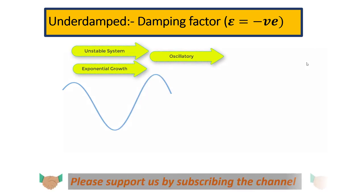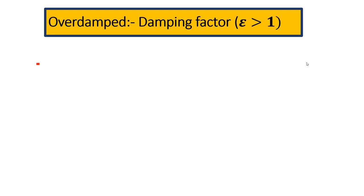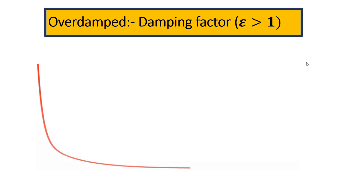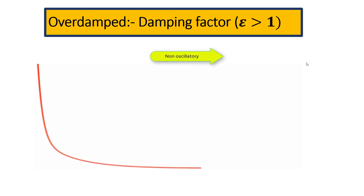The second main case is the overdamped system. Looking at the plot for damping factor greater than one, one thing we can say is that this is not an oscillatory plot. Based upon the damping factor, the response will decay asymptotically towards zero.